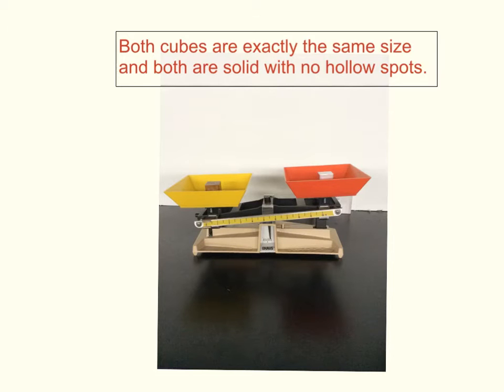Both cubes are exactly the same size and both are solid with no hollow spots. The aluminum cube is made of only aluminum atoms and the copper cube is made of only copper atoms.